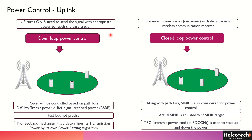Now there are two different kinds of power control: one is open loop power control and another is closed loop power control. As the name signifies, the closed loop power control is the mechanism where there is a feedback coming from the other party, which is the base station.